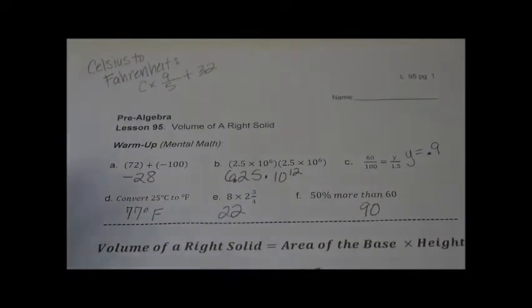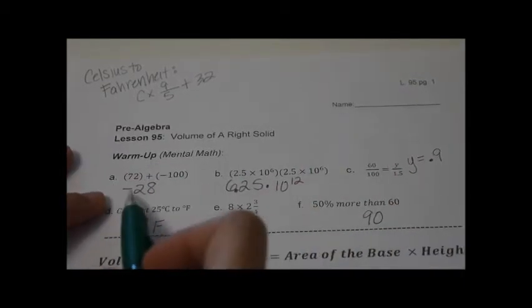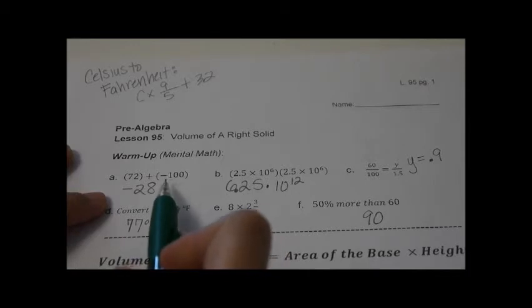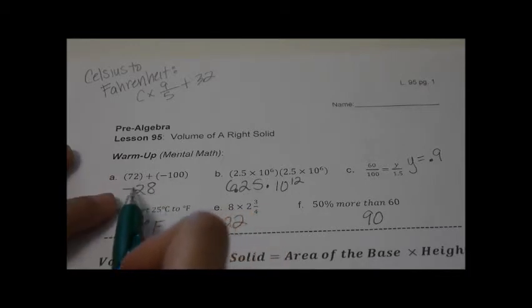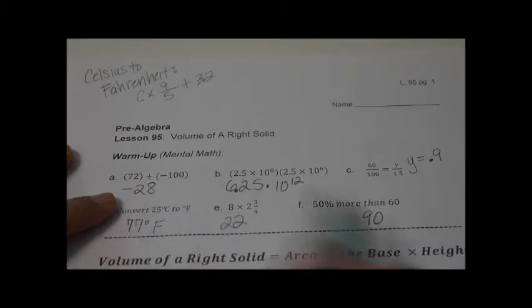Here are the answers to the mental math. I hope you did well. If you were not sure how to convert Celsius to Fahrenheit, I'll go over that in a second. So here we are with letter A. 100 wins with the negative, so it's going to be a negative. And if you take 72 away from 100, you get 28, so negative 28.